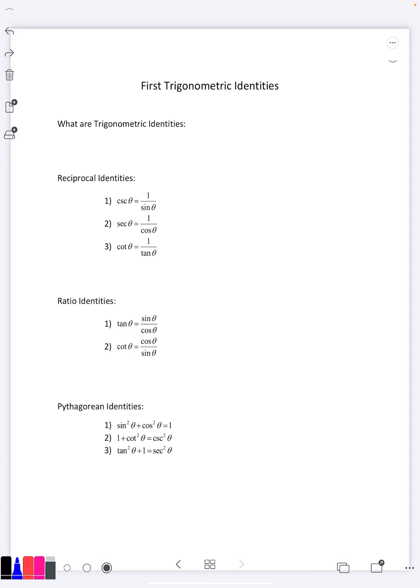So a trigonometric identity is an equation involving trigonometric functions that is true for every angle where it is defined.